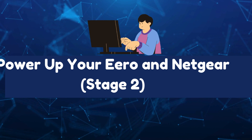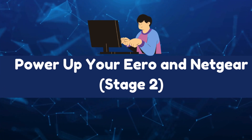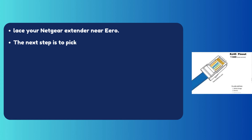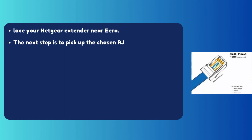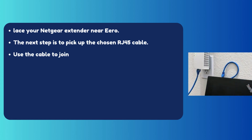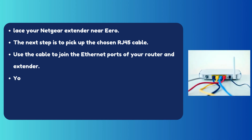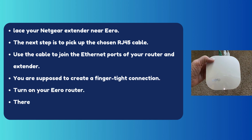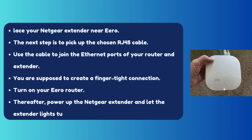Stage 2: Power up your Eero and Netgear. Place your Netgear extender near Eero. Pick up the chosen RJ45 cable and use it to join the Ethernet ports of your router and extender — you are supposed to create a finger-tight connection. Turn on your Eero router, then power up the Netgear extender and let the extender lights turn stable.